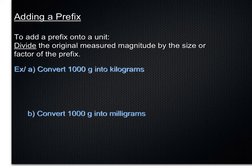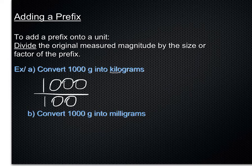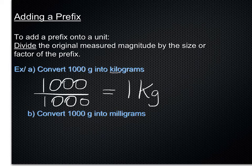How to convert from a large number to a shorthand version, or how to add a prefix in general onto a unit. You divide the original measured magnitude of the value by the size of the factor. For example, if we want to convert 1,000 grams into kilograms, we divide the 1,000 grams by the value of a kilo, which is 1,000. So we end up writing out 1,000 divided by 1,000, and no surprise, we get 1 kilogram. So we've added in the prefix there, which is the K.